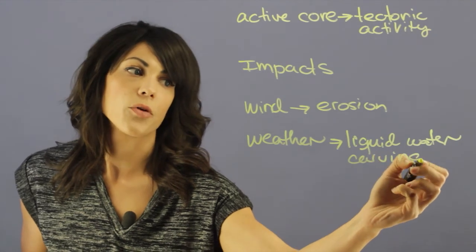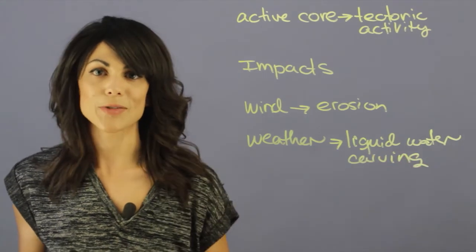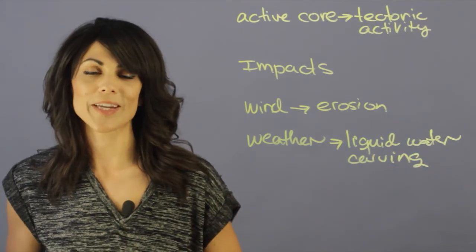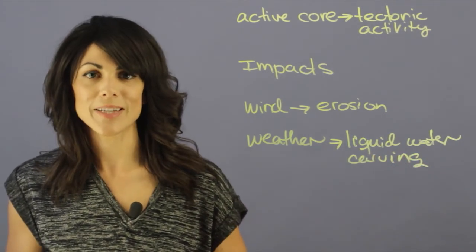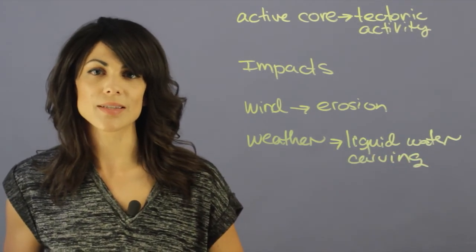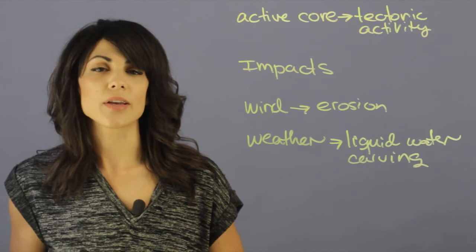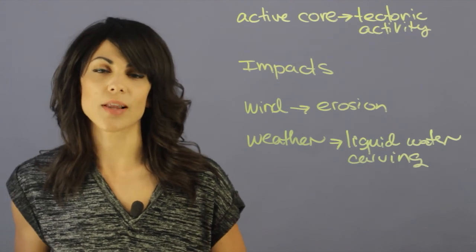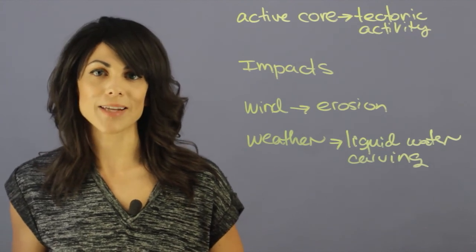This is how we get our river systems and so forth. My name is Aileen Perez and I'm an astrophysicist, and these are some things that can change the landform of a planet.